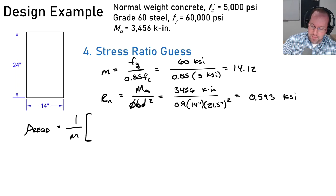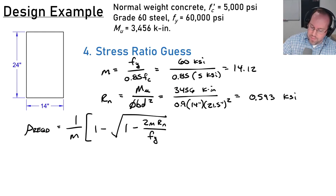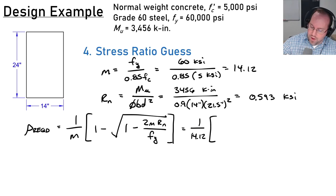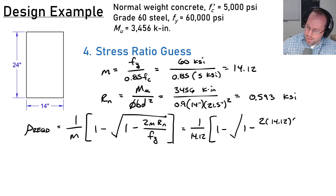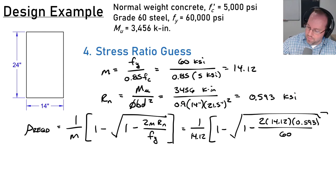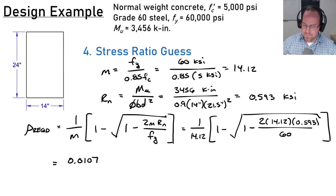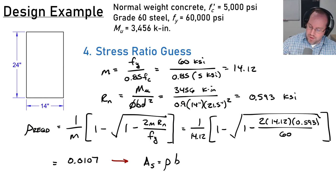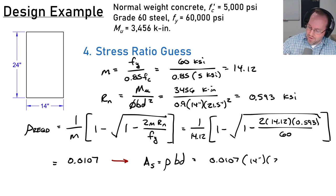The required reinforcement ratio is ρ = (1/m) × [1 − √(1 − 2m·Rn/fy)] = (1/14.12) × [1 − √(1 − 2 × 14.12 × 0.593 / 60)] = 0.0107. Converting to area of steel: As = ρ · b · d = 0.0107 × 14 × 21.5 = 3.22 in². This is slightly less than the ballpark number — it's a better approximation and well-justified to use going forward.